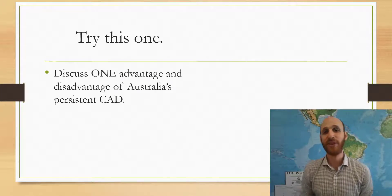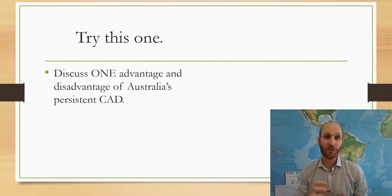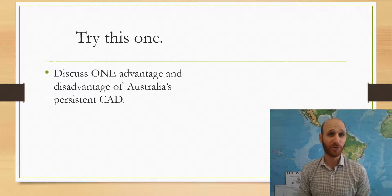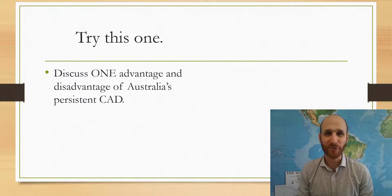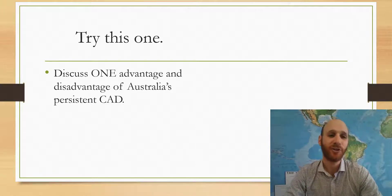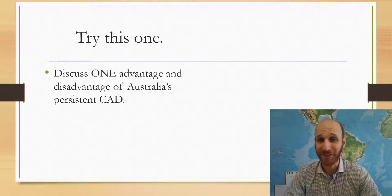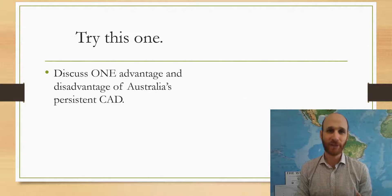In this discussion, we've looked at the different views of the current account deficit in terms of external stability. Try this question: discuss one advantage and one disadvantage of Australia's persistent current account deficit, and go back through this video and think about what are the different views that have been taken about the current account deficit.